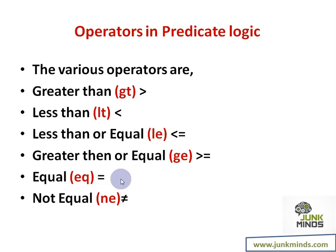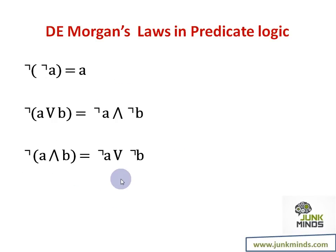We will also be needing certain laws which we have studied as De Morgan's laws in maybe one of the lower semesters. We are going to use three laws here: NOT of NOT A is A; NOT of (A or B) is NOT A and NOT B; NOT of (A and B) is NOT A or NOT B. We will use these formulas wherever needed when we need to make certain conversions. You can rewind the video and list down the operators and De Morgan's laws. Just this little information is enough for us to get started with predicate logic.